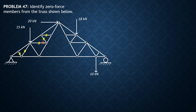Then we proceed to this joint. There are three members plus a force — four total — so this joint does not qualify for Case 2.